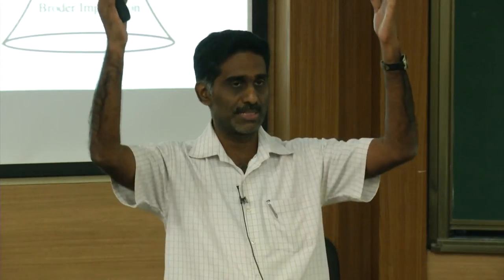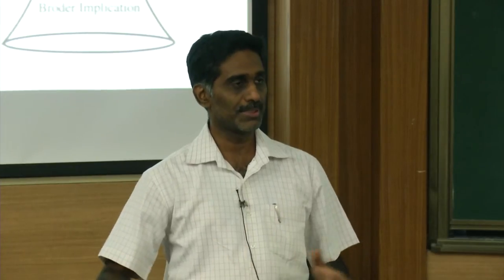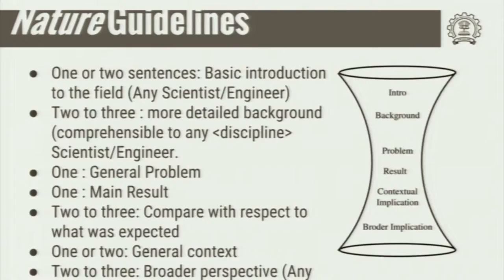So you start with general science, department, specific area, result, department, general science. This is how an abstract is structured. This structure is taken from the science magazine Nature, which I have slightly modified to expand, because Nature is a little bit specific. By and large, this hourglass structure is there.